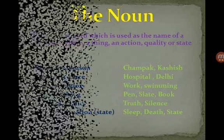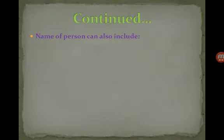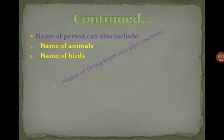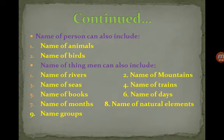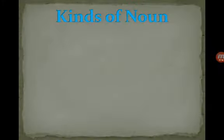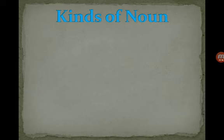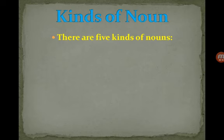We will tell you what can be included under person, animals and birds, and things. We have seen rivers, seas, books, months, groups, mountains, trains, days, elements — these are all things which are nouns. Now we see in detail what are the kinds of nouns, because there are five basic kinds of nouns that we have to keep in mind, whether we are preparing for a competitive exam or learning for self-learning or any purpose.